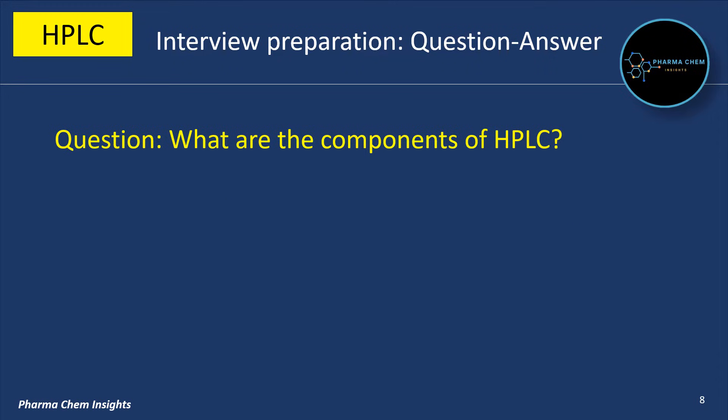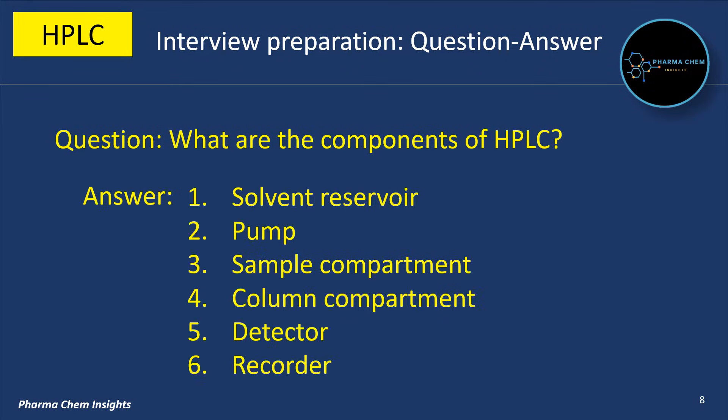What are the components of HPLC? There are 6 components in HPLC. First is solvent reservoir to store mobile phase. Second is pump. Third is sample compartment. Fourth is column compartment. Fifth is detector. Sixth is recorder.